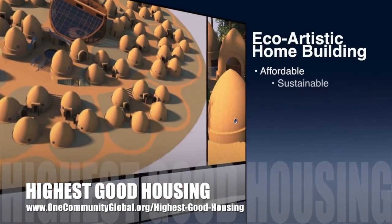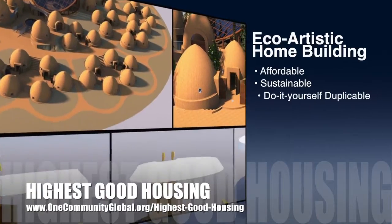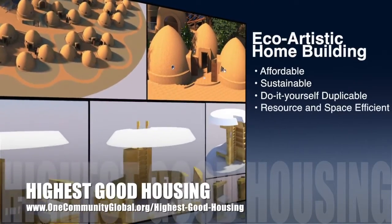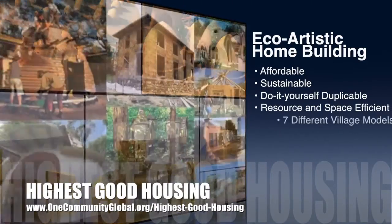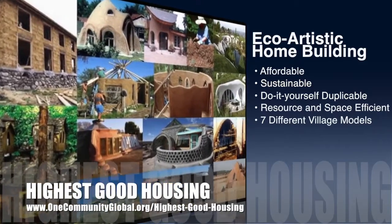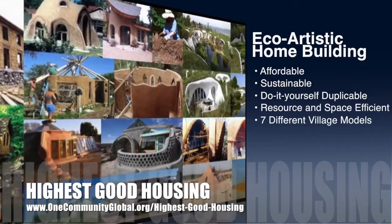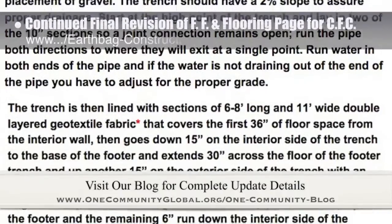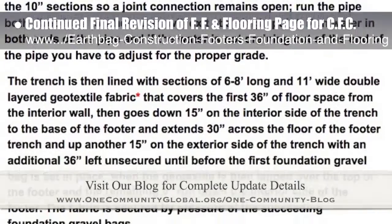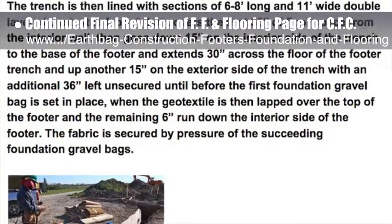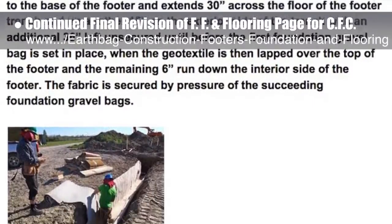The OneCommunity approach to highest good housing is eco-artistic home building that is affordable, sustainable, do-it-yourself duplicable, resource and space efficient, and consists of seven different sustainably constructed village models. This last week the core team working on highest good housing continued what we hope will be the final revision of the footers, foundations, and flooring page for the upcoming crowdfunding campaign.